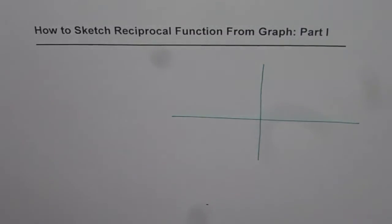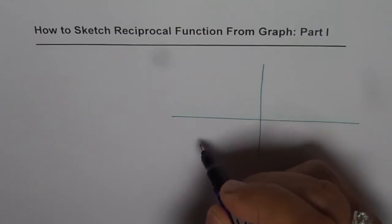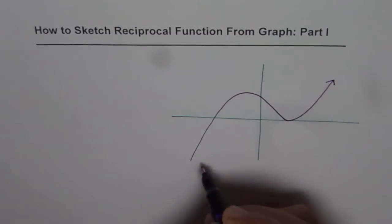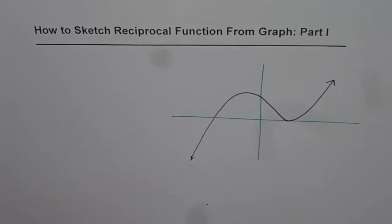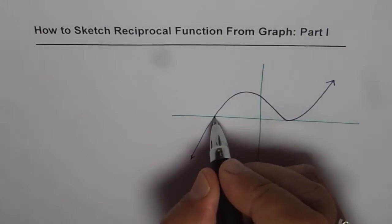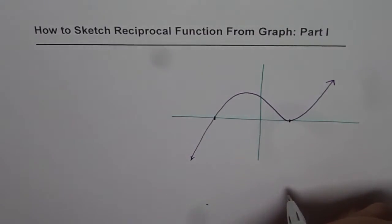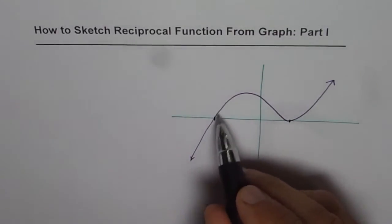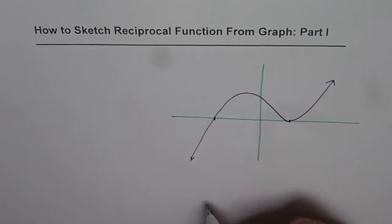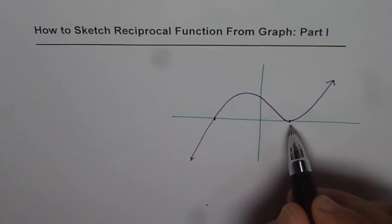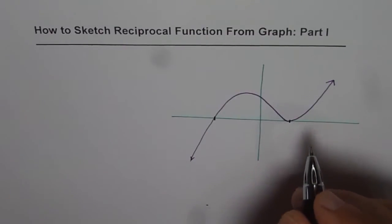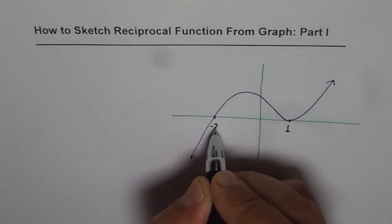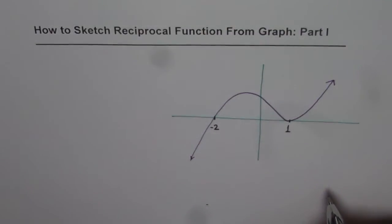Let me draw a function here. I will take an example of a polynomial function — a cubic function. A cubic function will have a smooth curve. This particular function has two x-intercepts. One of them seems to be linear, the other seems to be quadratic in nature. The order is odd for the one that crosses the x-axis like a line, and order 2 for the one that turns. Let us say this point is 1 and this is minus 2.